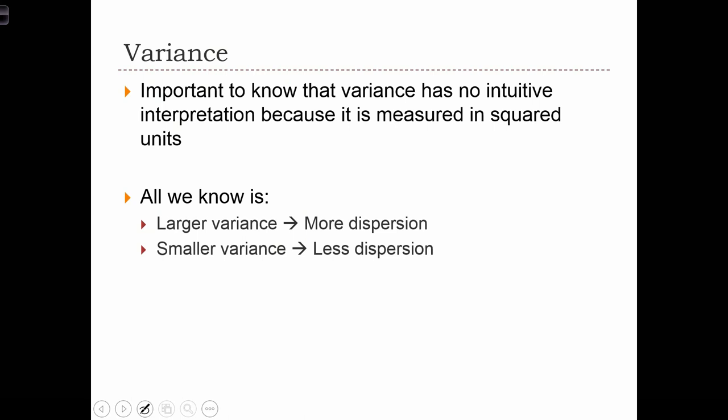The squared deviation from the mean is 2/3. It's very non-intuitive to understand a deviance in terms of squared deviations, because the squared deviations aren't in the same units of measurement as our original x values — they're in squared units. All we can tell is that samples with larger variances have more dispersion, and samples with smaller variances have less dispersion.